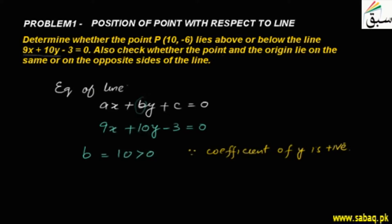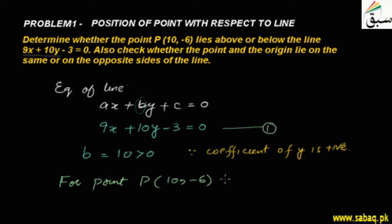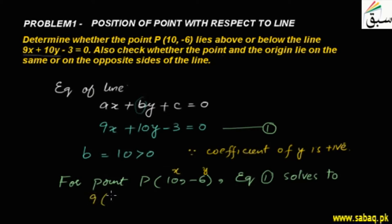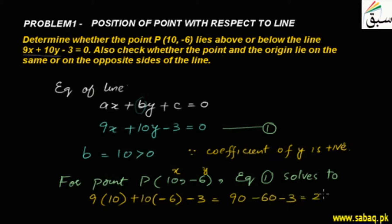Now let us evaluate the equation for point P(10, -6). We substitute: 9 times 10, plus 10 times (-6), minus 3. This gives 90 minus 60 minus 3, which equals 27, and 27 is greater than 0.